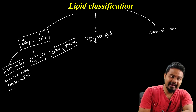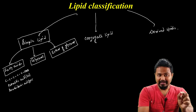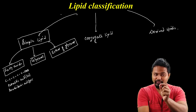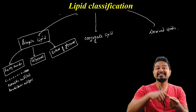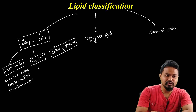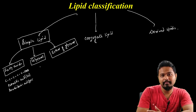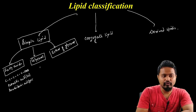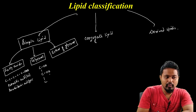We have arachidonic acid, which is a 20-carbon fatty acid. So fatty acids are lipids, and glycerol is also a lipid. Glycerol has a chemical structure and is an alcohol compound.